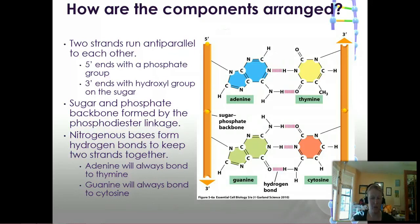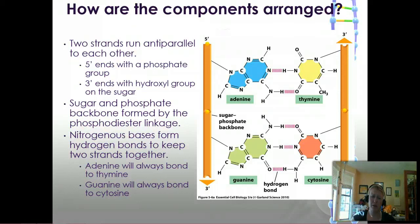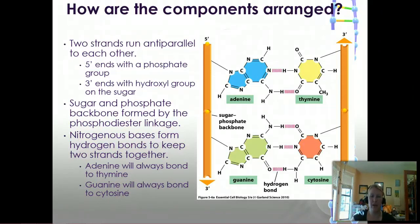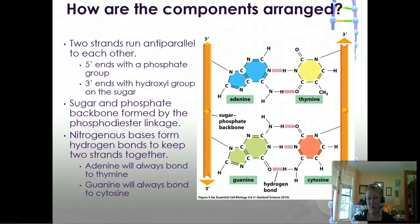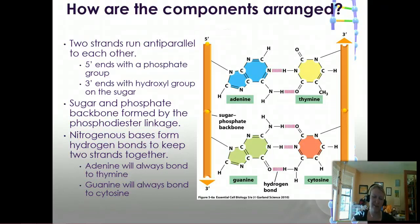The reason why we see five prime and three prime is that these are labels for directionality. The three prime end is where the hydroxyl group is left out at the very end, and the five prime end is where the phosphate group is sticking out. In between the backbone is the pyrimidine-purine binding, and they bind through hydrogen bonding. Adenine will always bind with thymine and guanine will always bind with cytosine because it's thermodynamically favorable.